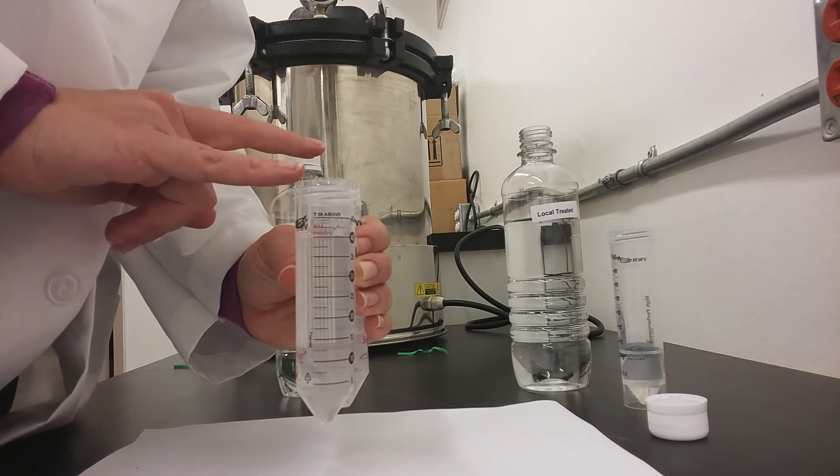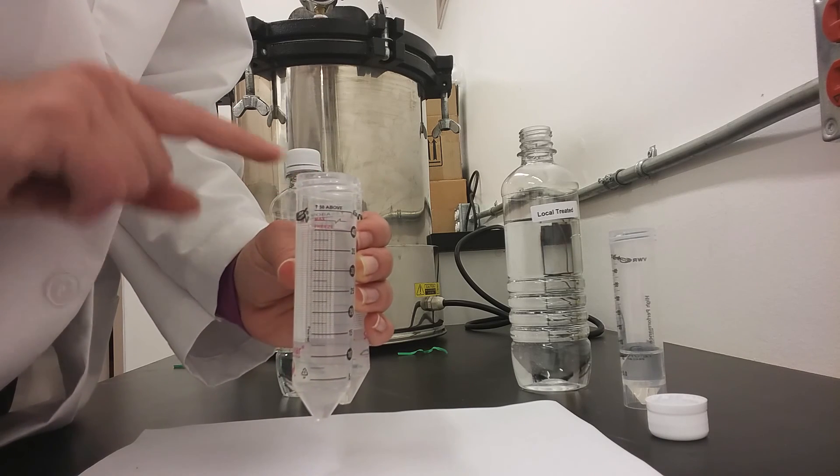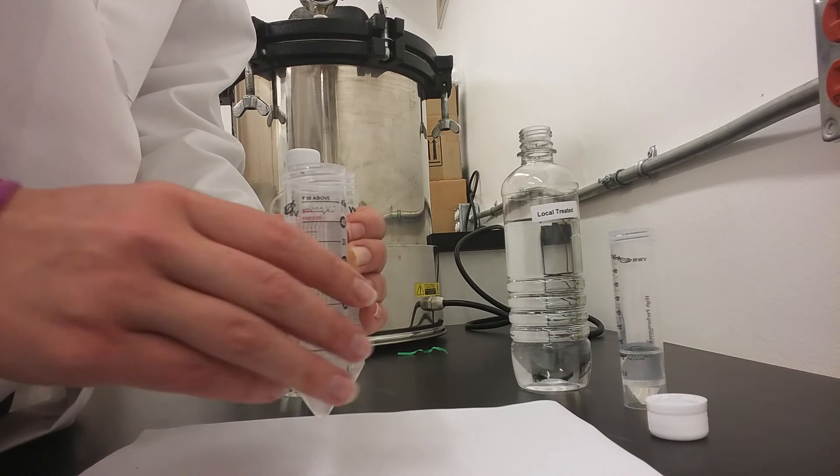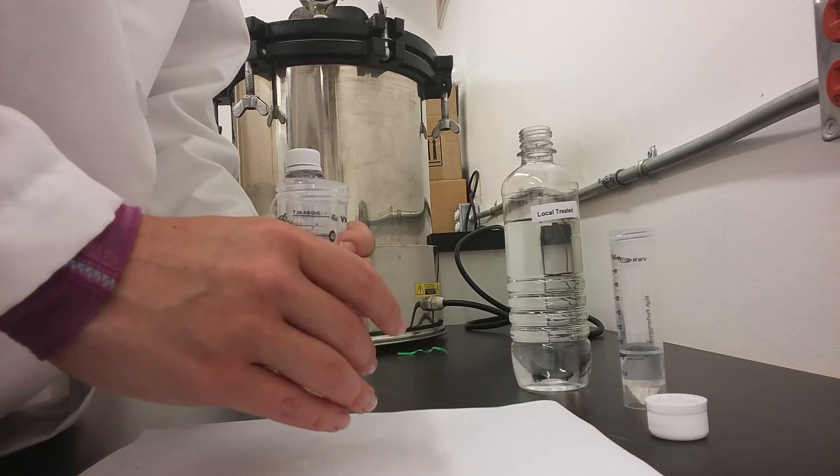The deionized water and the Control Guideline Canada sample should look similar, and your source water that you are choosing to test may look either lighter or darker depending on the quality.